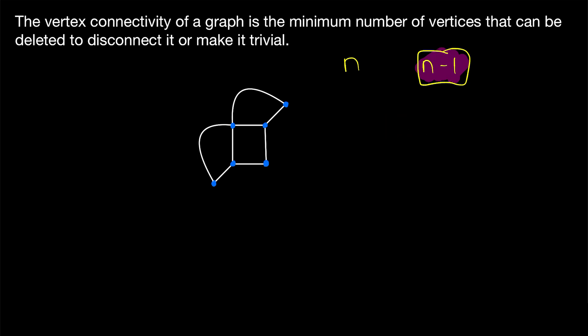However, if a graph is complete, it cannot be disconnected by deleting vertices. So we define its vertex connectivity to be equal to n minus one. The vertex connectivity — that's the lowercase Greek letter kappa, which we use to indicate vertex connectivity — of the complete graph Kₙ (the complete graph on n vertices) is equal to n minus one.